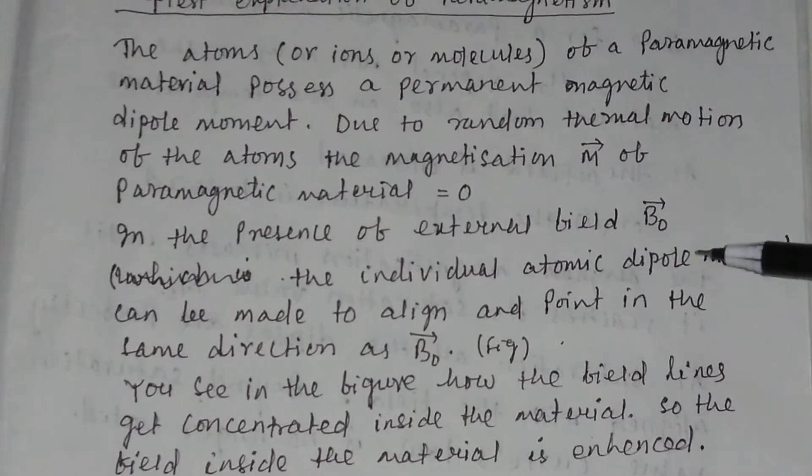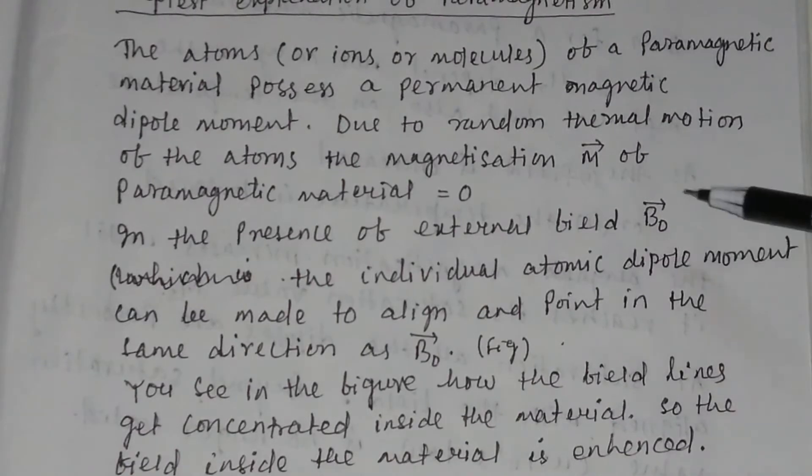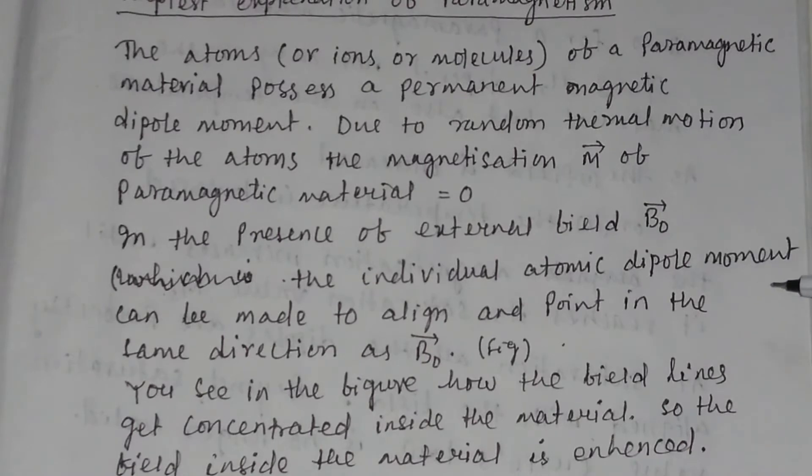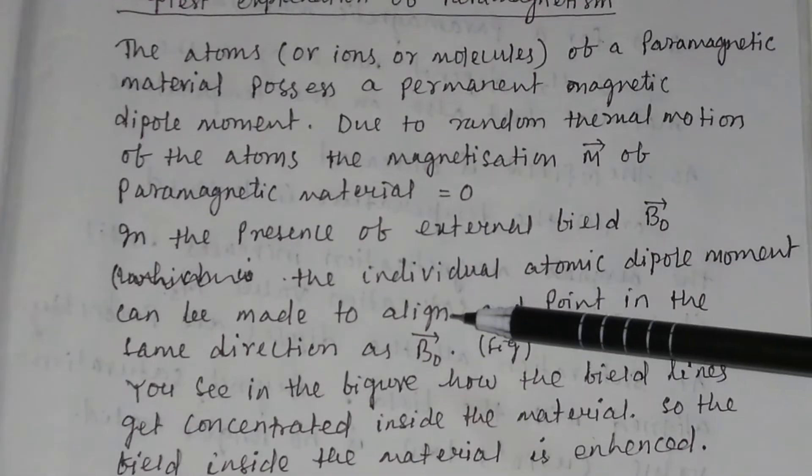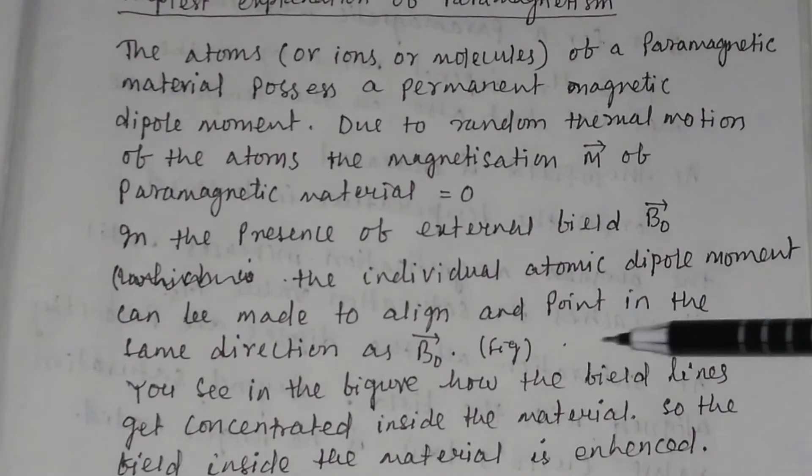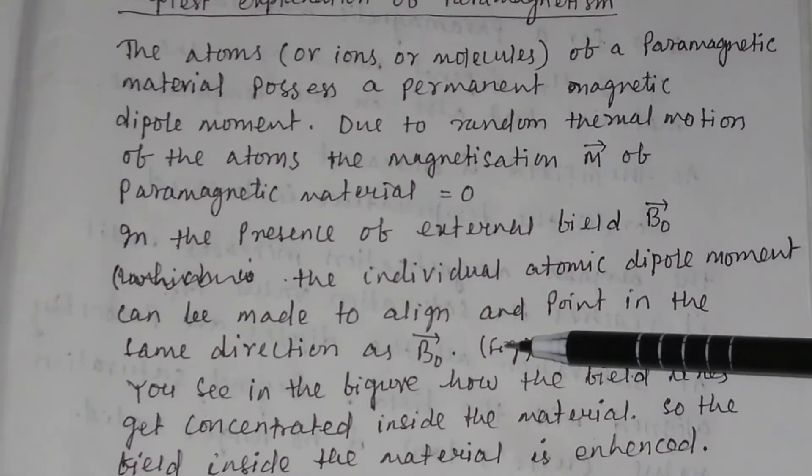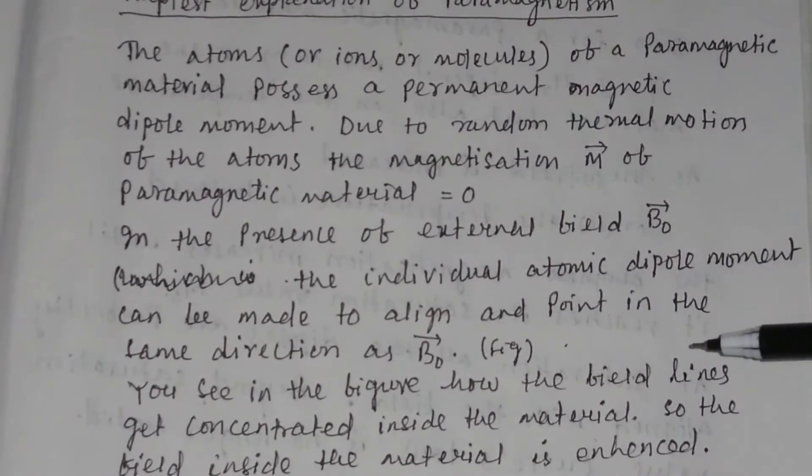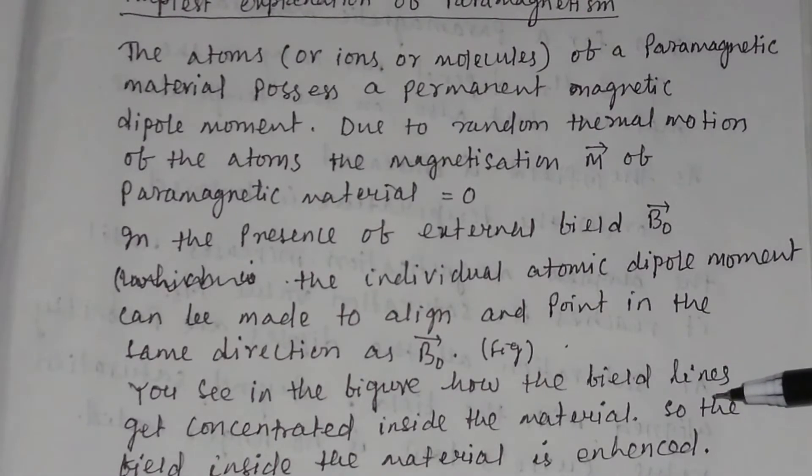In the presence of the external field B0, suppose B0 is the applied external field, the individual atomic dipole moment can be made to align and point in the same direction as B0. You see in the figure how the field lines get concentrated inside the material.